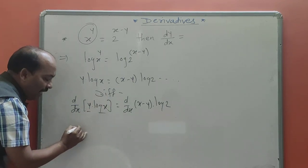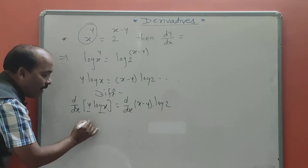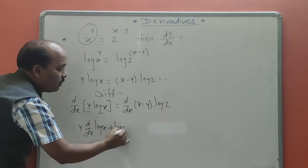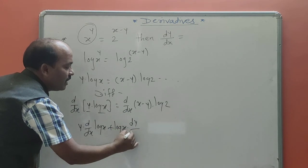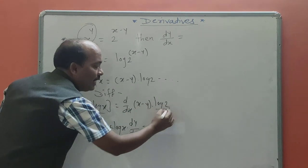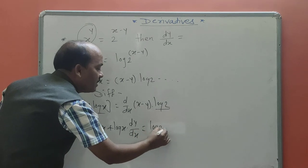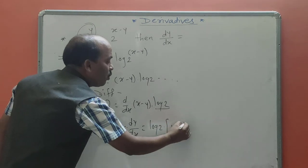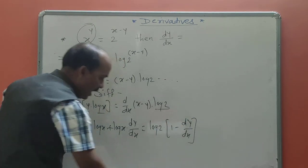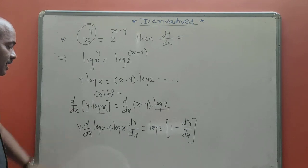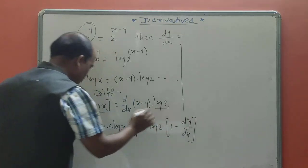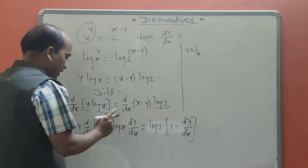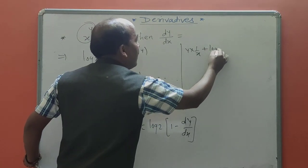We know that the derivative of u·v means: the first term u times the derivative of v, which is the second term log x, plus log x times the derivative of the first term, that is dy/dx. On the LHS, log acts as a constant — its derivative times 1 gives 1, derivative of x is 1, derivative of y is dy/dx.